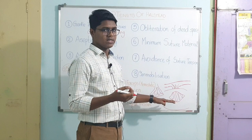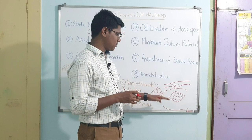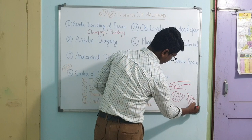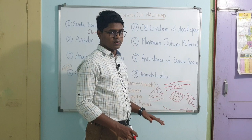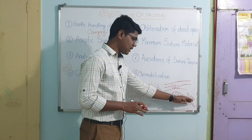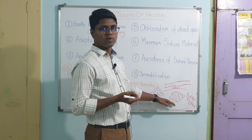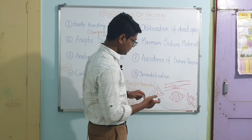Suture materials have foreign body properties so there will be tissue reaction. If one vicryl — that is polyglactin 910 — is enough for closure of the dead space, use that much only. Don't go for two continuous layer sutures if not necessary, because too much suture material causes excess tissue reaction and post-operative complications. Next tenet is avoidance of suture tension — this is very important. After giving subcutaneous suture, when you do skin closure using horizontal mattress suture, while tightening the knot, tighten only until the knot touches the skin — do not make it too tight.